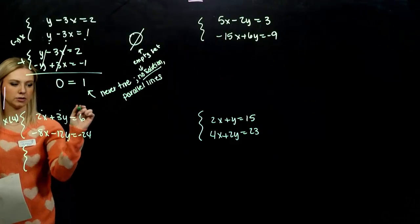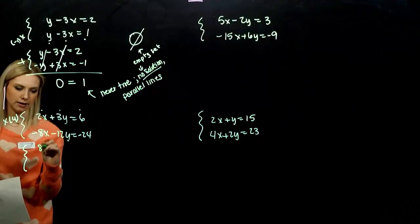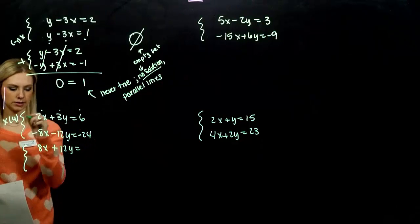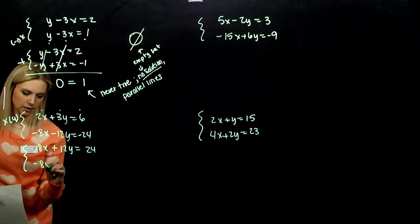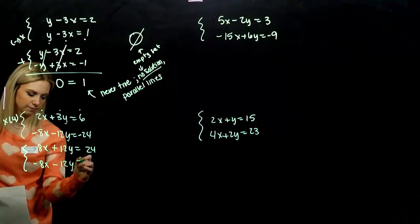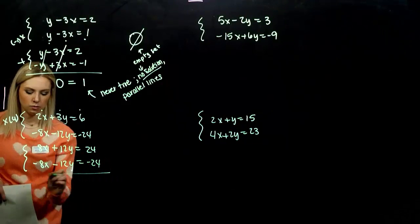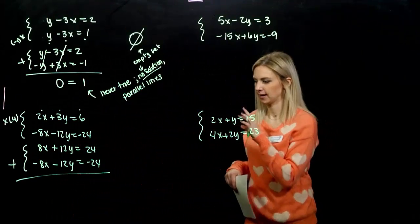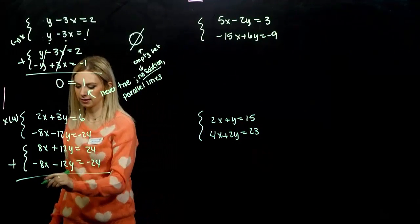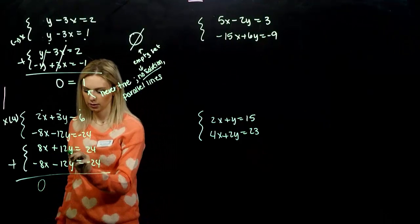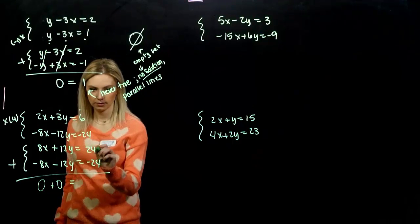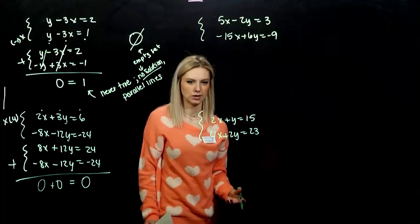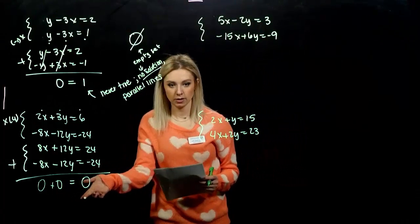If I multiply everything up here by four, equivalent system. Every single term by four. 8x + 12y equals 6 times 4, which is 24. And this one didn't change. And what do you notice as we eliminate x? As I add those together, we designed it to get rid of x. But what also did we get rid of? Y's. And everything on the right as well. 24 minus 24 is zero.